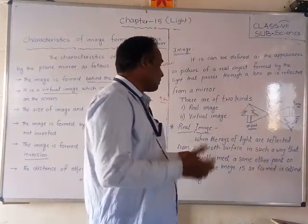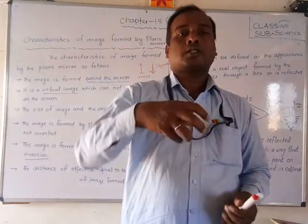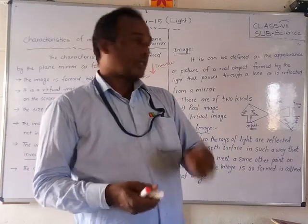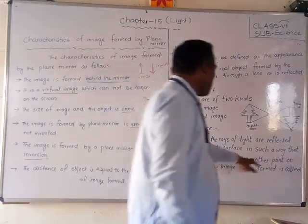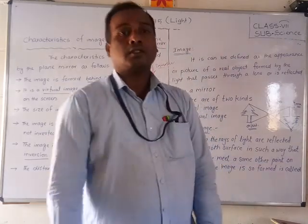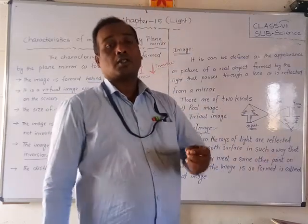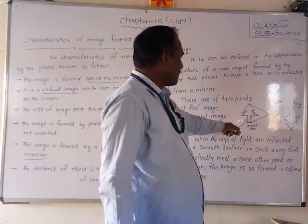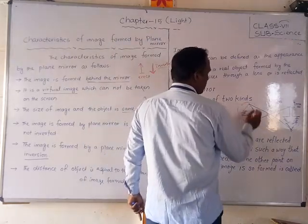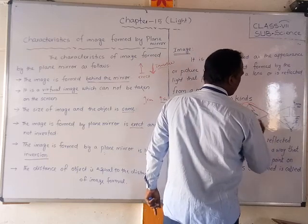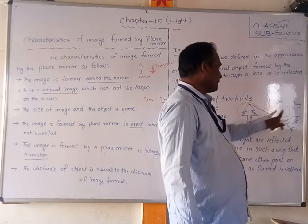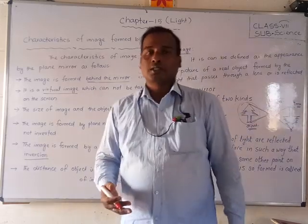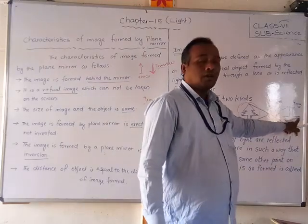When light reflects from a smooth surface and converges to another point on a screen, the image formed at that point is a real image. Real images are generally inverted. For example, suppose you have a plant as an object. When light passes through a lens or reflects from a mirror, the image forms inverted on the other side — that inverted image on the screen is the real image.